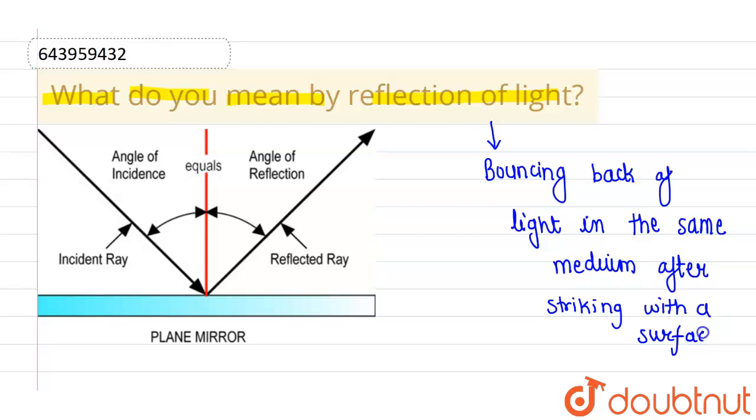This is known as reflection of light. So in this particular diagram, I am showing you the ray diagram. Let's suppose this is the source of energy, or source of light from which rays are emerging out.